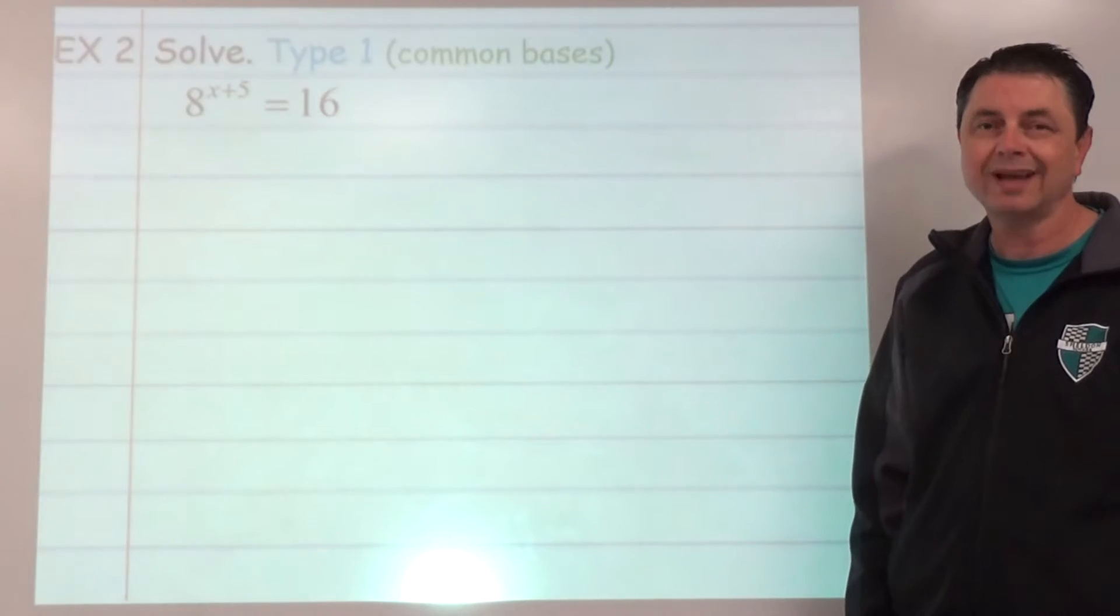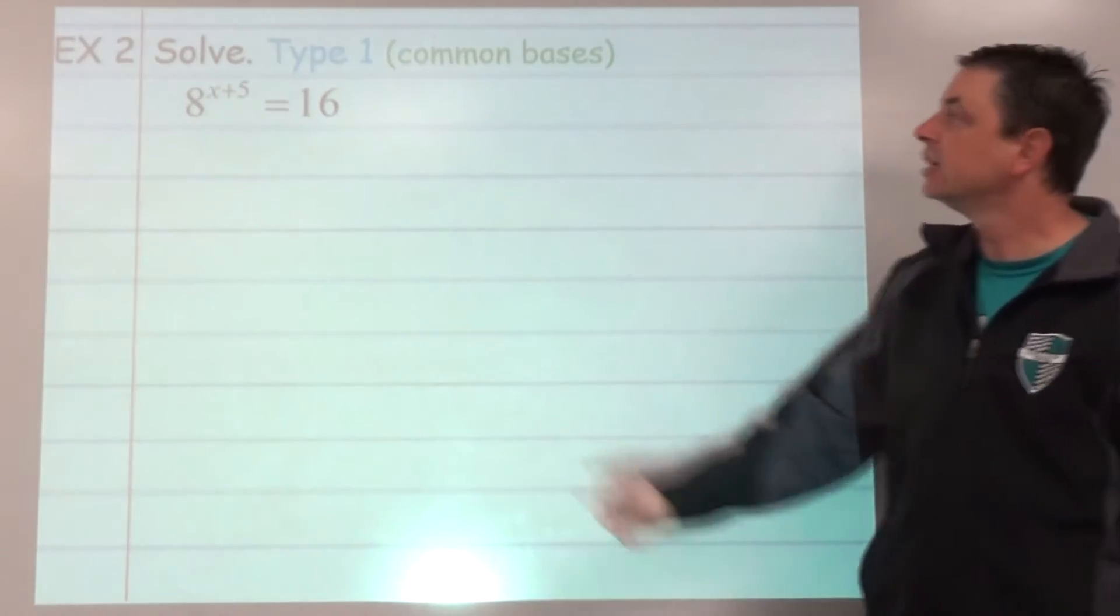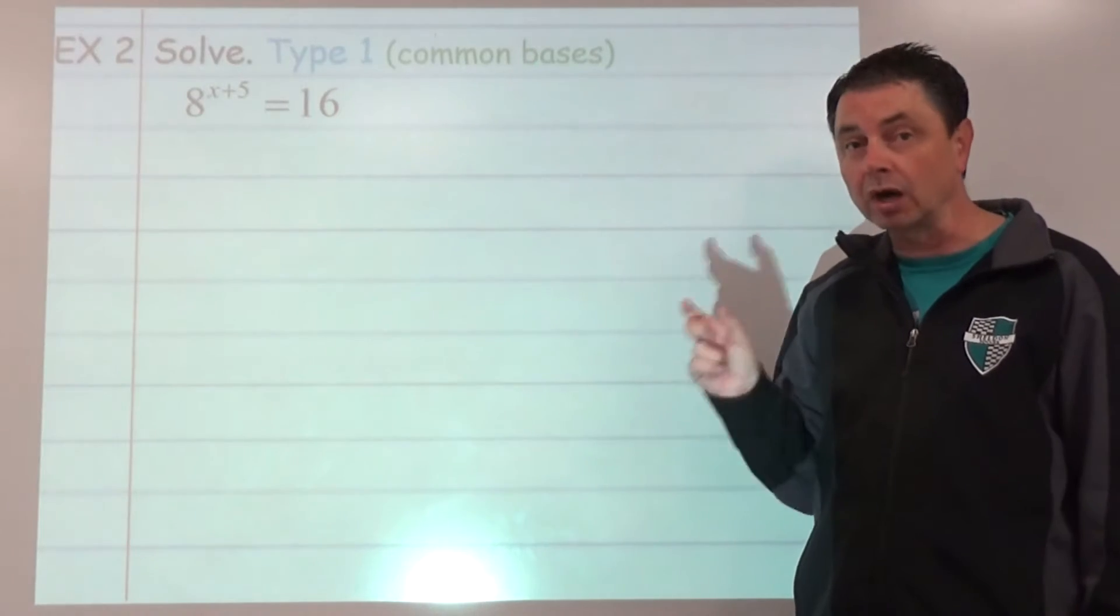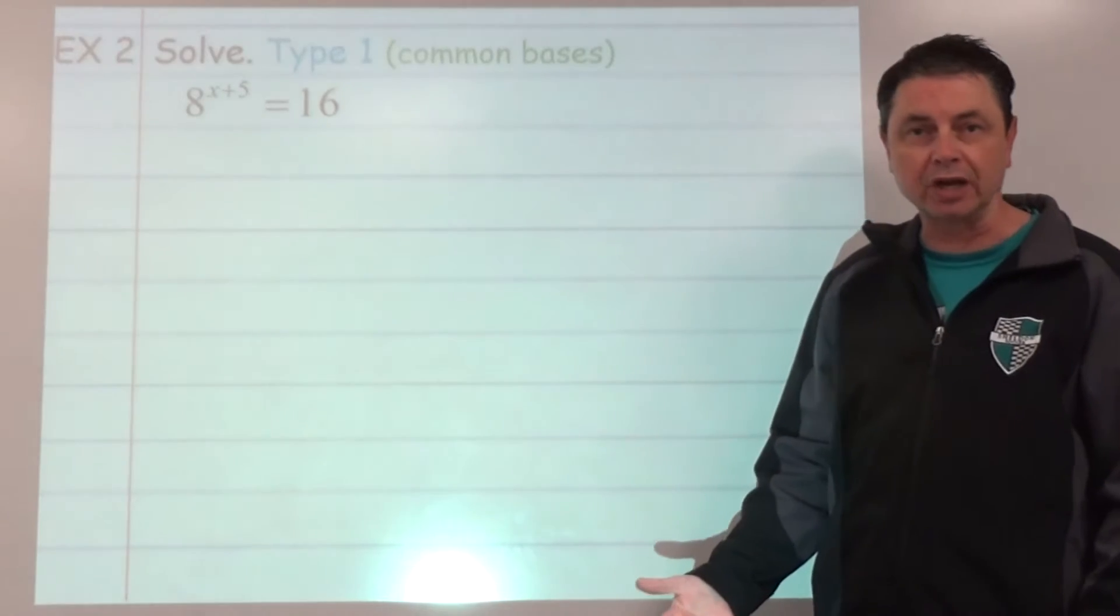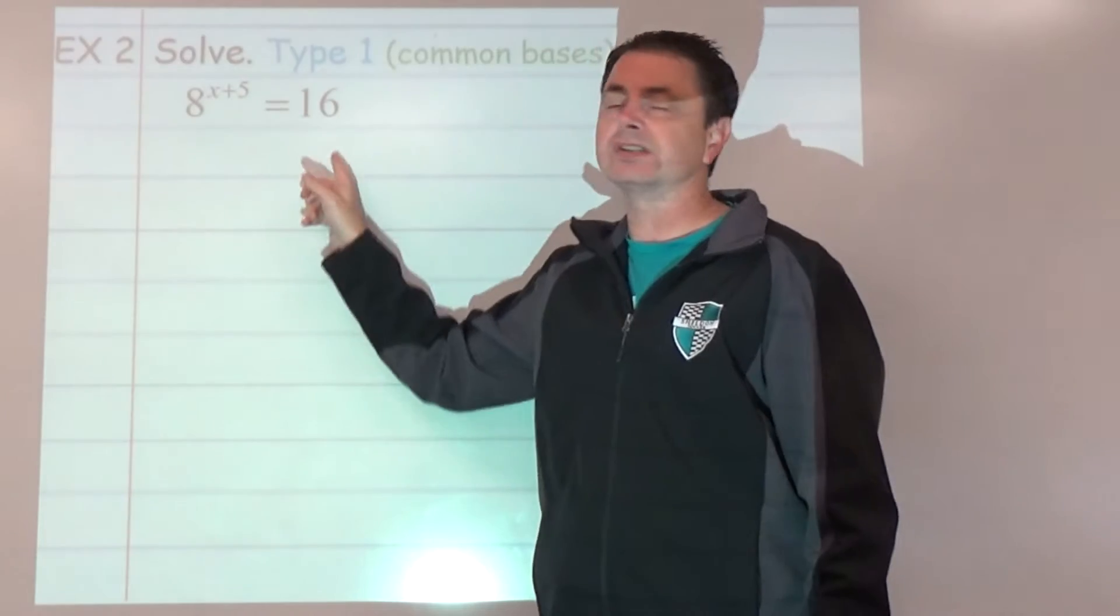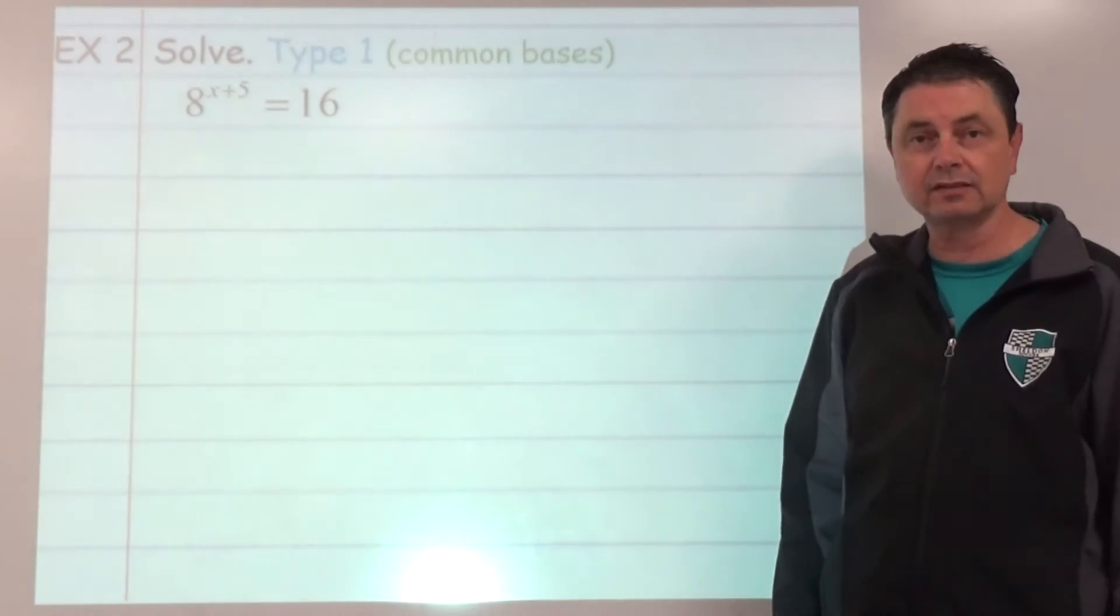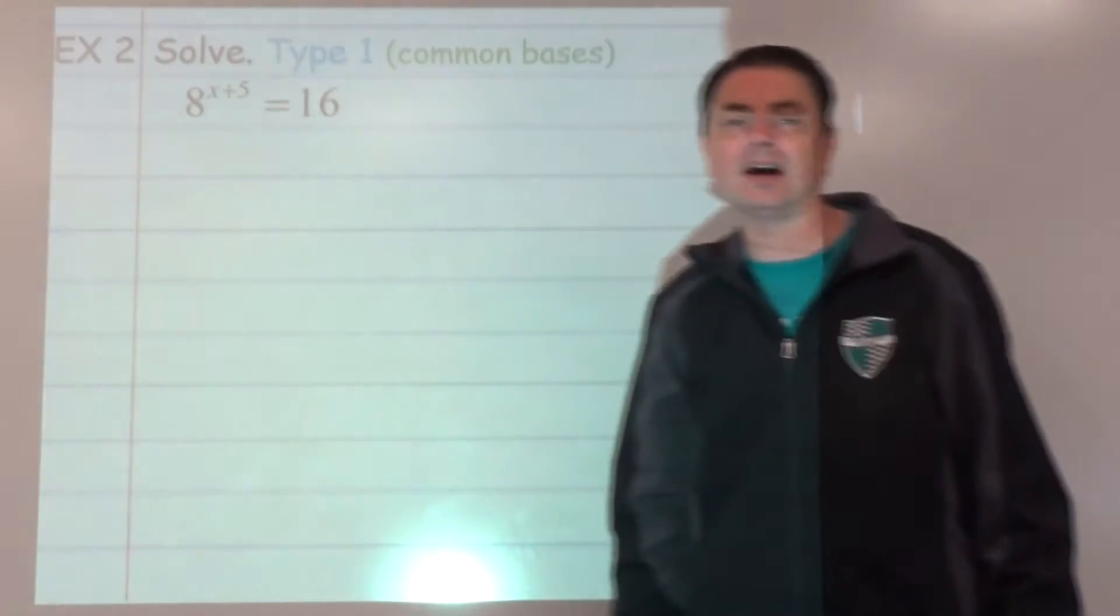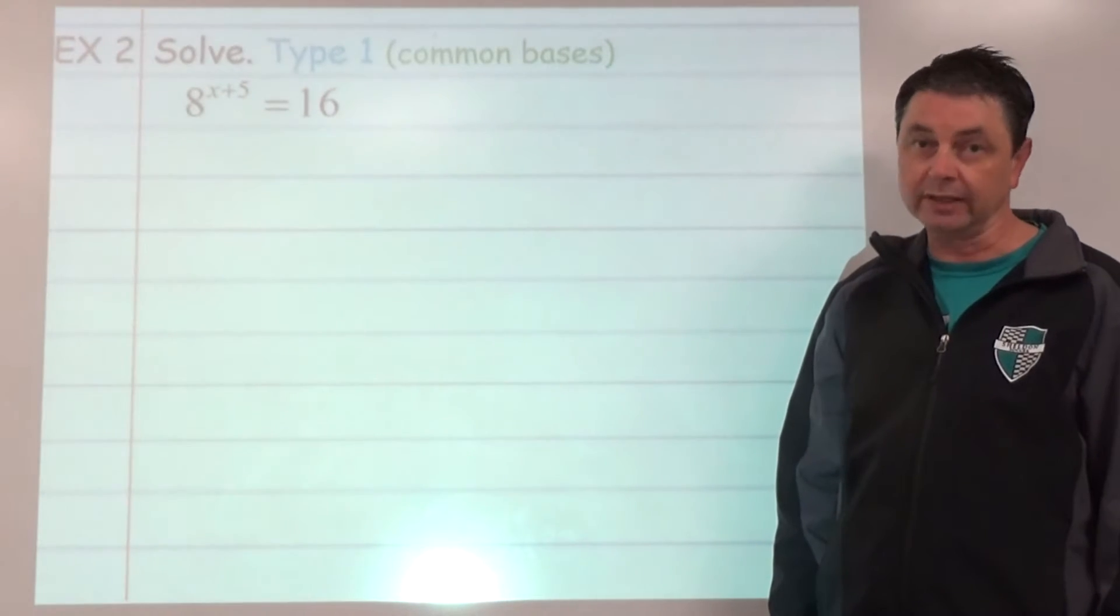Example number 2: 8 to the power of x plus 5 equals 16. This time, the exponent's not our variable, but our variable is part of that exponent. So it is an exponential equation. Our first thought is do both sides have a common base? The answer is yes. 8 and 16 are both powers of what number? The answer is 2.